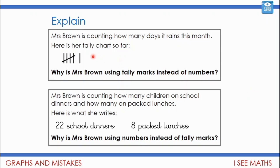In the first case, Mrs Brown is counting how many days it rains — it's an ongoing total, so she doesn't know what the final amount will be. Each time she puts a little mark, then counts up the marks at the end, rather than writing a running number. Whereas if she already knows there are 22 children on school dinners and eight on packed lunches, she can just count and write the numbers in — she's not collecting information over a period of time.